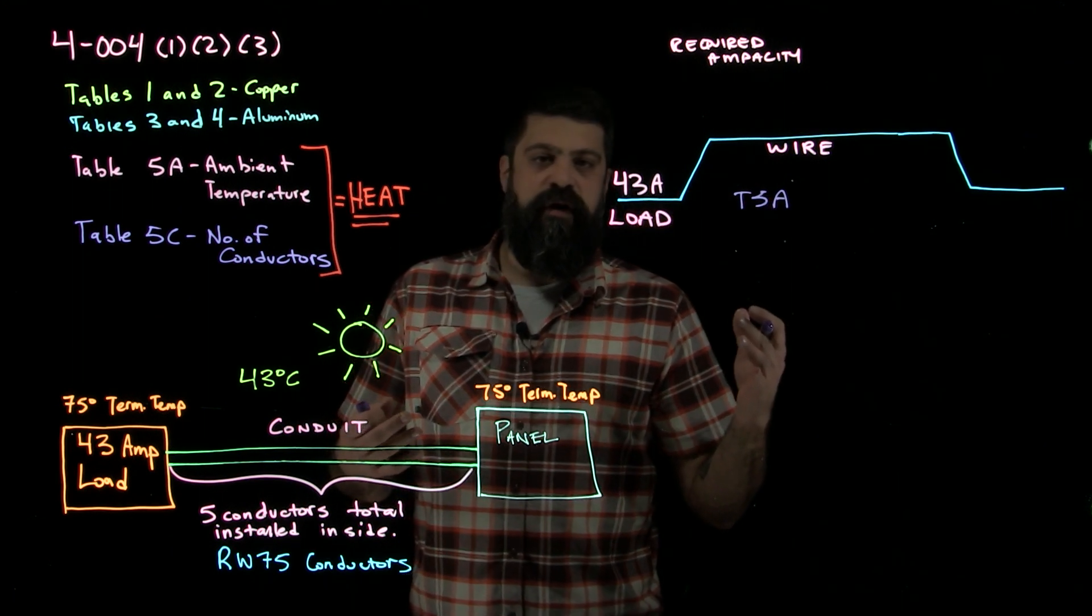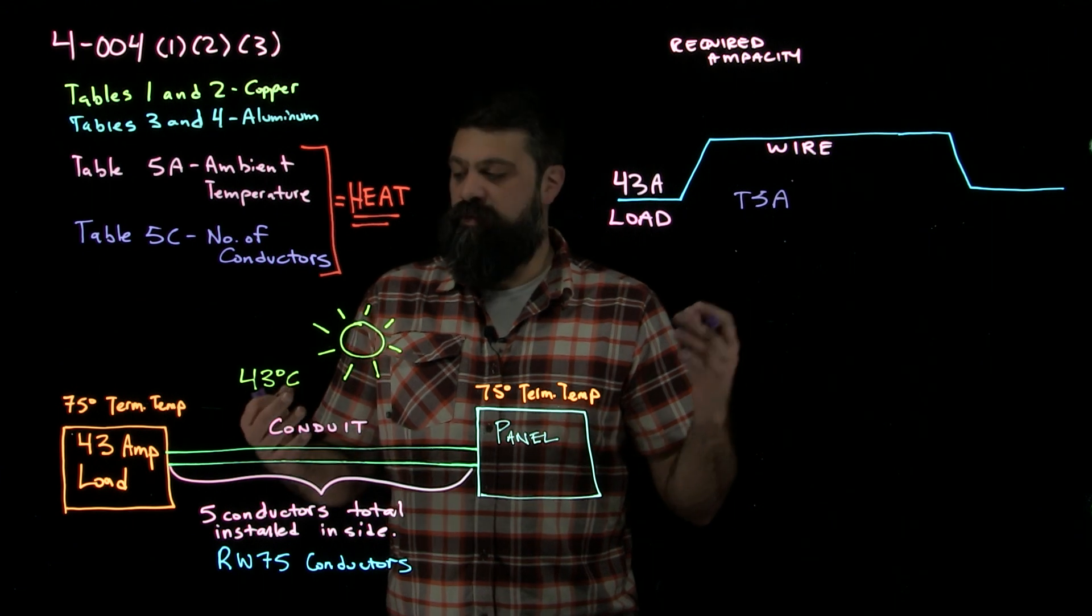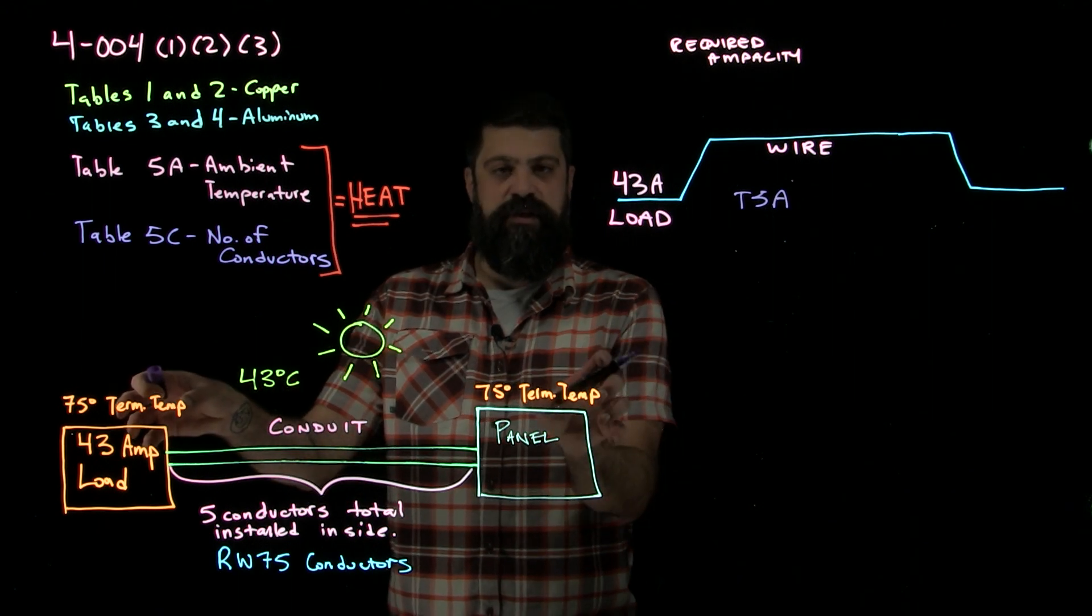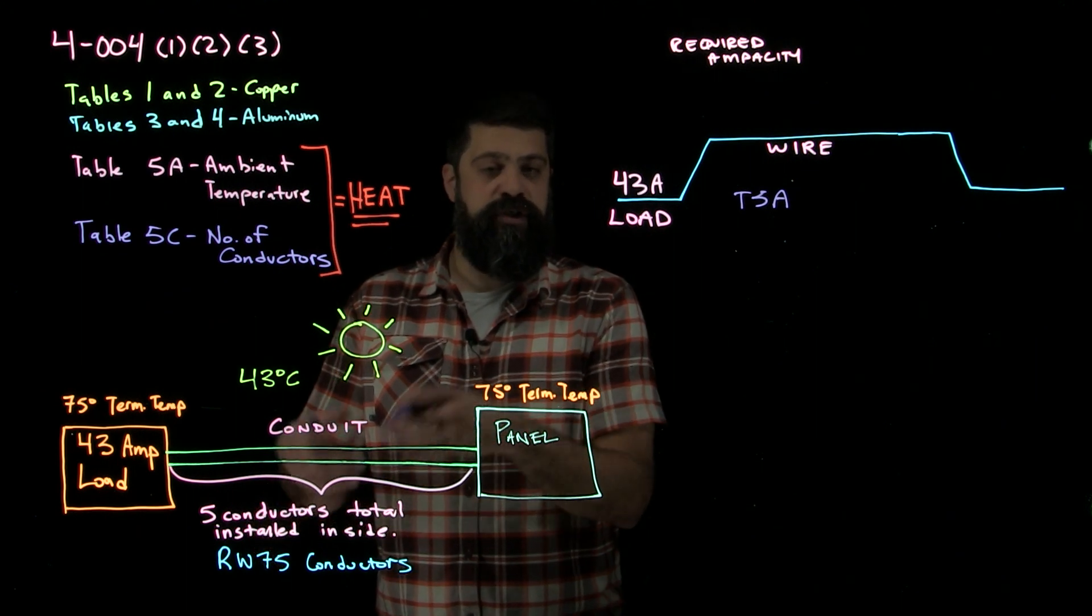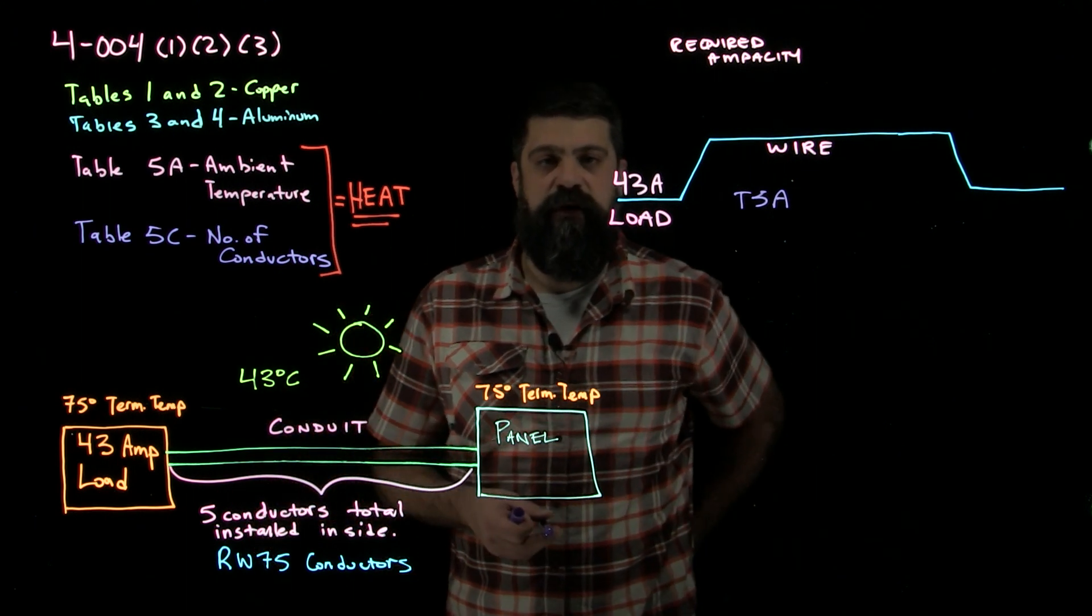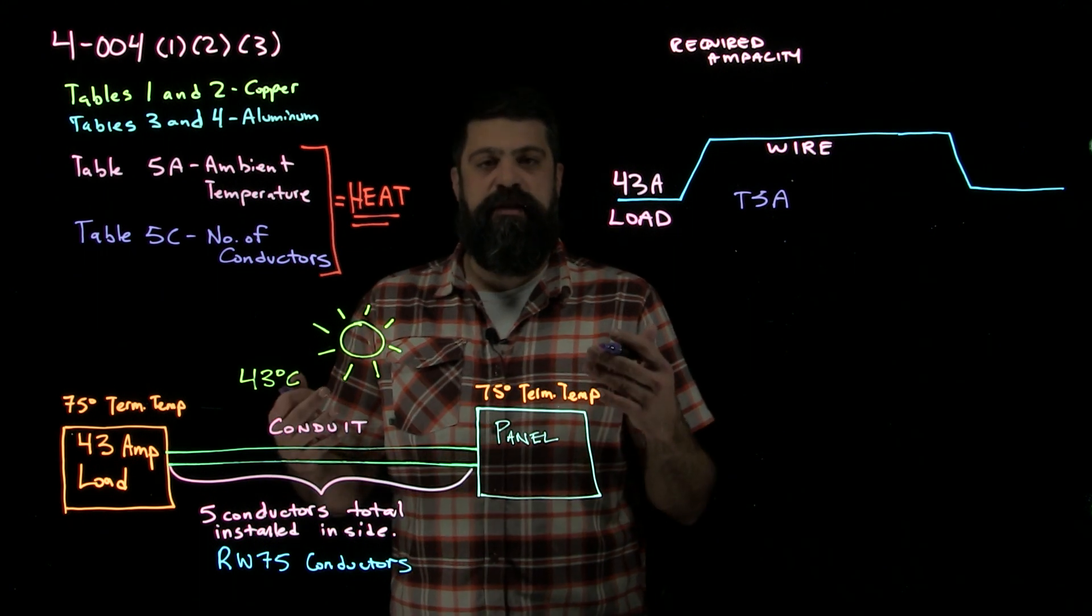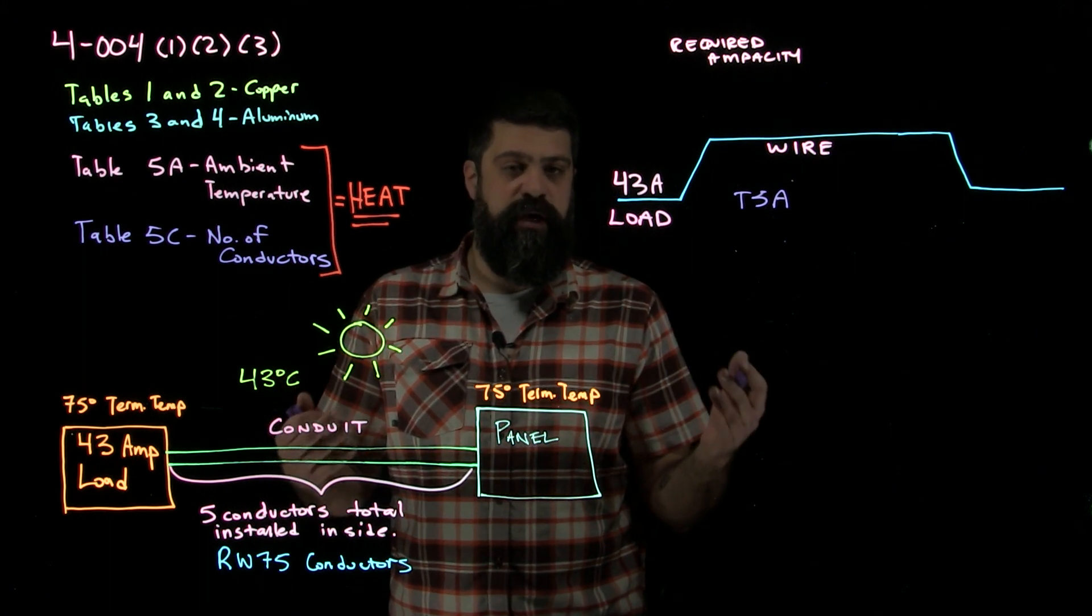So the 75 degree column is what we're going to be using. The reason for that is we have a 75 degree termination temperature in our equipment. We also have RW75 wire, which is rated, the insulation is rated for 75 degrees. So this is where we get into this thing we talked about, lowest termination temperature.